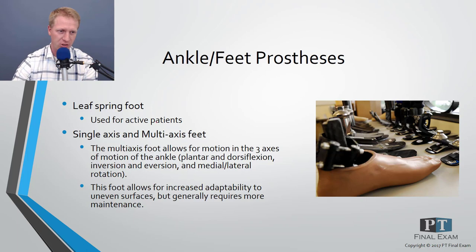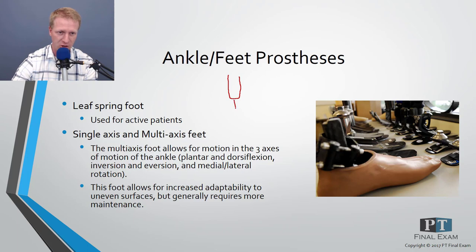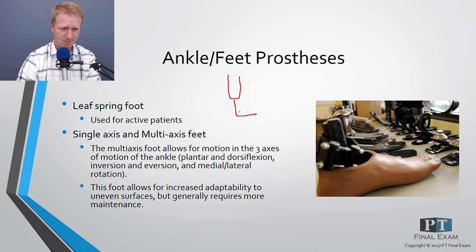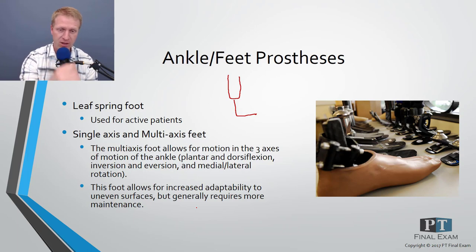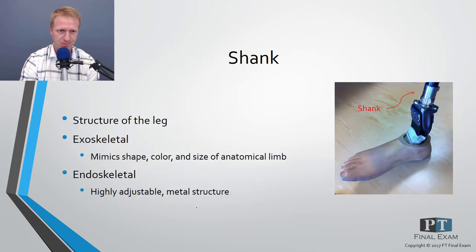Other foot options include a leaf spring foot — a giant spring for energy storage seen in Paralympic athletes — though it doesn't allow much multi-axial motion, requiring a stable patient. Multi-axial feet allow adaptation to uneven surfaces but require more maintenance and more stability from the patient due to the extra degrees of freedom.